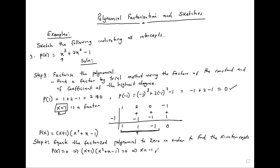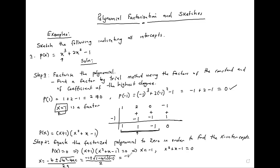This gives us x equals negative 1. For x squared plus x minus 1 equals zero, we use the quadratic formula: x equals negative b plus or minus the root of b squared minus 4ac over 2a. So we get negative 1 plus or minus root of 5 over 2, meaning x equals negative 1 plus root 5 over 2, or x equals negative 1 minus root 5 over 2.